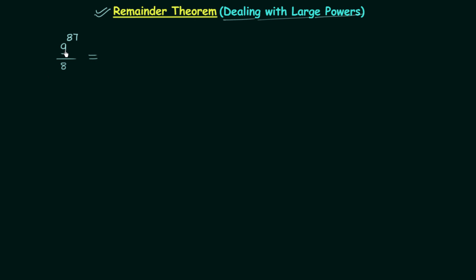I will write 9 as 8 plus 1. Since 9 has the power 87, (8+1) will also have the power 87, divided by 8. Now you will ask me why I wrote 9 as 8 plus 1 — why not 7 plus 2 or 6 plus 3?